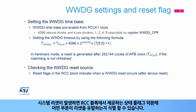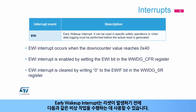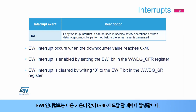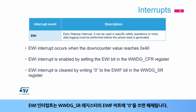When a system reset occurs, it is possible to identify which part caused the reset thanks to status flags provided by the RCC block. The window watchdog can be one of the sources. The early wake-up interrupt can be used to perform emergency tasks before the reset occurs, such as data logging, data protection, watchdog refresh to prevent the reset, or other emergency tasks. The EWI interrupt occurs whenever the down counter value reaches 0x40. It is enabled by setting the EWI bit in the WWDG CFR register. The EWI interrupt is cleared by writing 0 to the EWIF bit in the WWDGSR register.